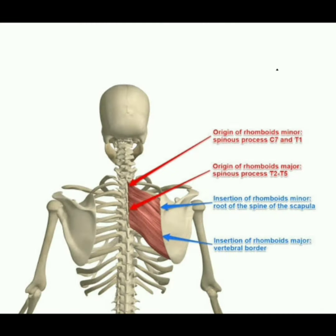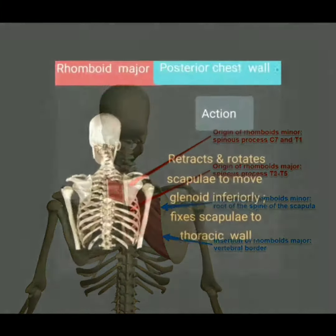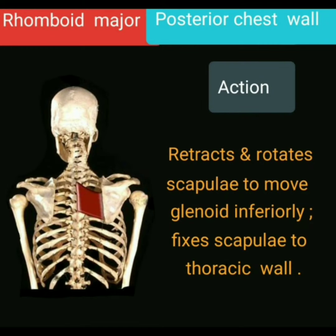This image marks the origin and insertion of both rhomboid major and rhomboid minor muscles. The rhomboid major retracts and rotates the scapula to move the glenoid inferiorly, and fixes the scapula to the thoracic wall.